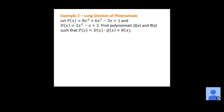The divisor, 2x squared minus x plus 2, goes on the outside. On the inside, we start with 8x to the fourth. Notice we don't have an x cubed term, so I'm going to put plus 0x cubed — that's what I was talking about before. If there's a missing term, put a zero in its place so everything lines up. Then we have plus 6x squared minus 3x plus 1.